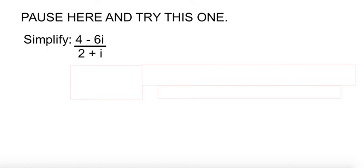So give this one a shot and then check what you got. Again, we have to multiply by the conjugate of the bottom, 2 minus i. And if you do it to the bottom, you have to do it to the top.